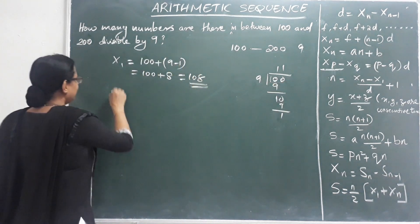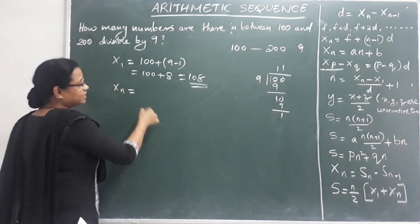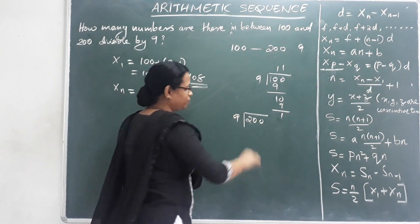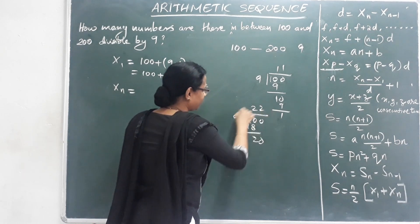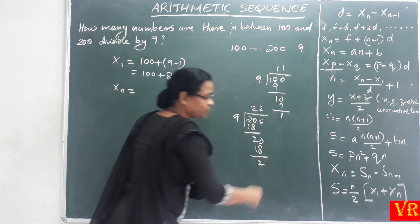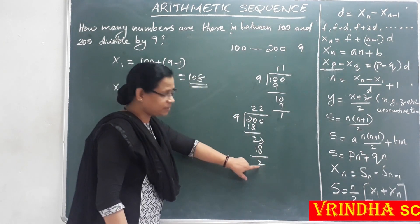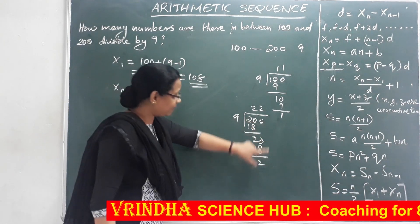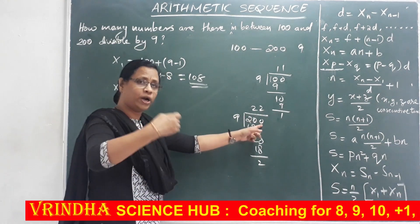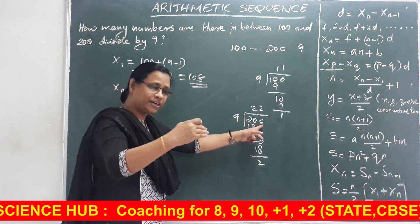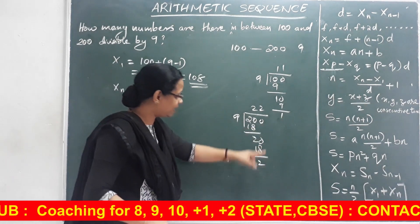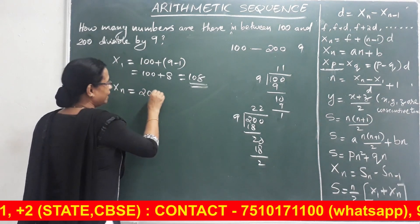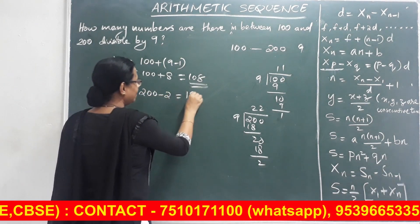Now we find the last term. We divide the second boundary, 200, by 9. The remainder is 2. So we subtract: 200 minus 2, that is equal to 198. So 198 is the last number divisible by 9 before 200.